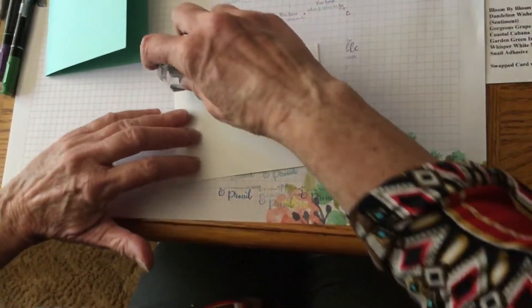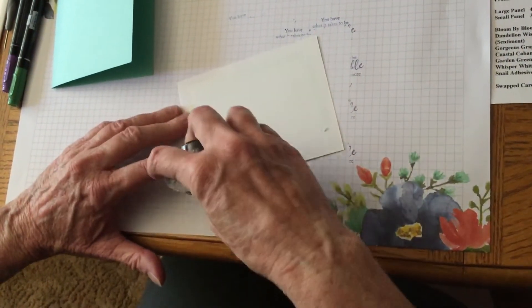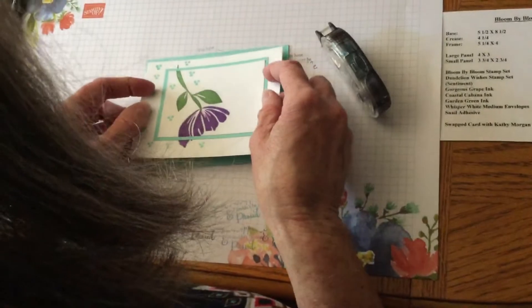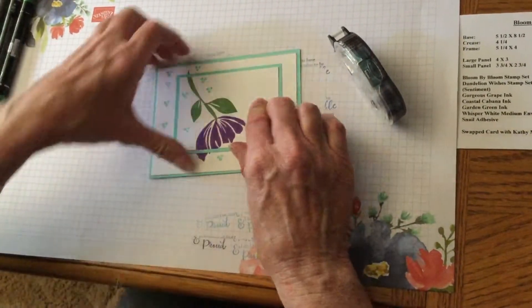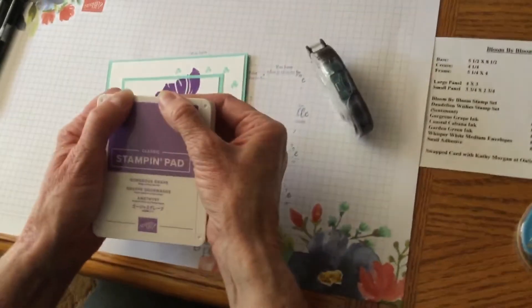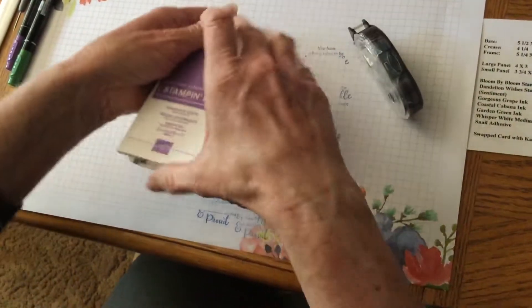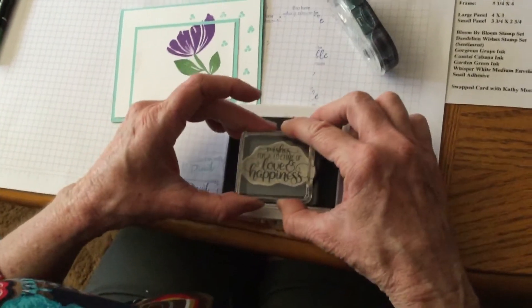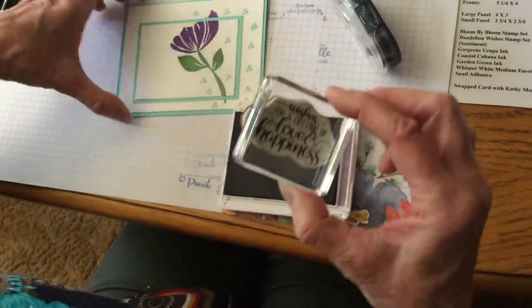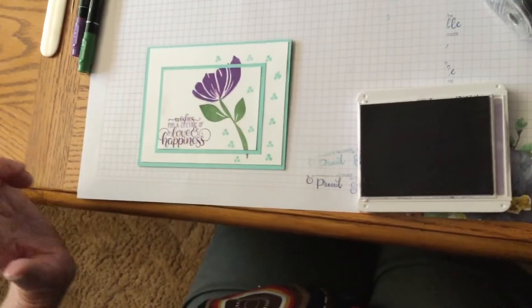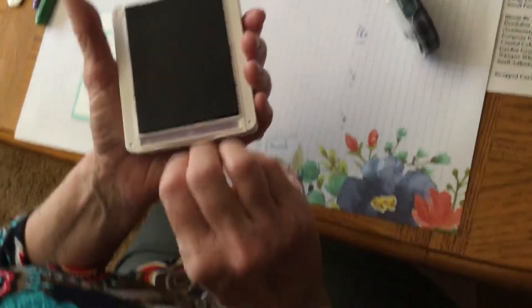Now we're going to close that in. And then we'll just go ahead and adhere this to our card base. And don't forget like I almost did. You've got to get out your Gorgeous Grape again and let's put our sentiment. So there's that. And if you'll remember, I told you if you press right here, these will open up for you. And this is from, like I said, from our Dandelion Wishes. So we'll ink that up good. And then we're just going to set that right here on the side. There we go. Wishes for a lifetime of love and happiness.